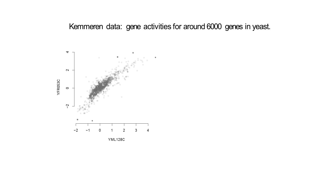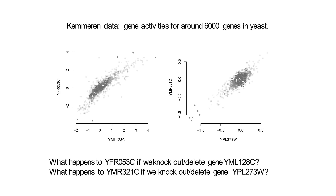I want to start with the dataset we've worked with: the Cameron data. There you have the gene activity of approximately 6,000 genes from yeast. For each gene, you measure the mRNA concentration. Here's a single scatter plot where you see the activity of gene YML128C against YVAR053C.